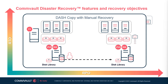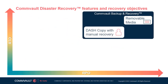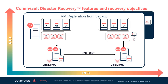We'll take a look at the three replication modes offered by Commvault Disaster Recovery. The first mode uses backup data from source VMs to create VMs at one or more destination sites. VM replication is typically deployed using dash copy, whereby the destination is created from a full backup and then updates from incremental backups are applied to keep the destination VMs in sync.